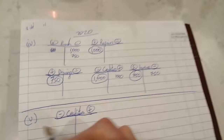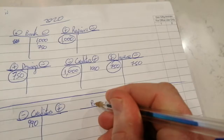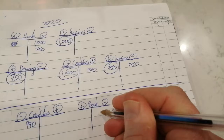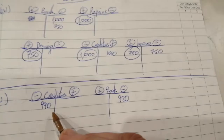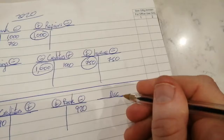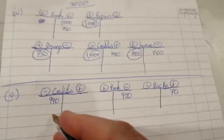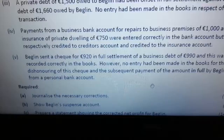The people the business owes money to are the creditors. So the creditors account goes down by £990 — the full debt — and that was recorded correctly. The bank account goes down by £920 since that was the amount of the check. Because we paid £920 to settle a debt of £990, we received a discount of £70, recorded as discount received — a gain. They recorded that correctly.